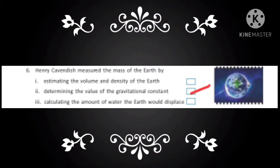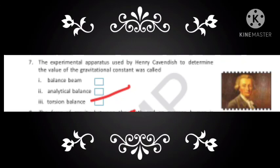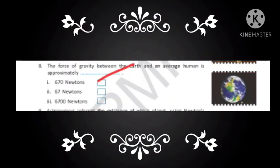Henry Cavendish used an experimental apparatus to find the value of gravitational constant and that experimental apparatus is known as torsion balance. I repeat, torsion balance was used by Henry Cavendish to find the value of gravitational constant.